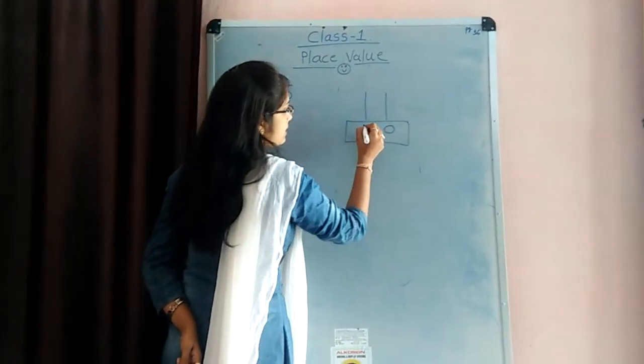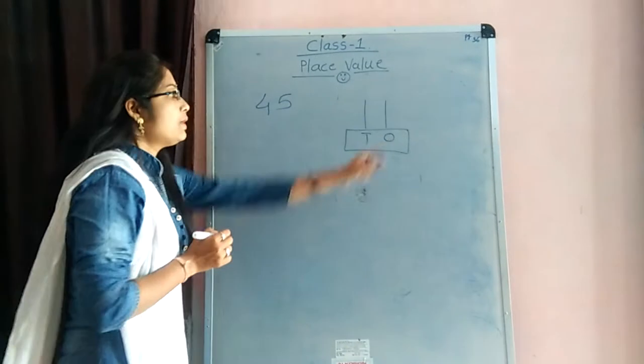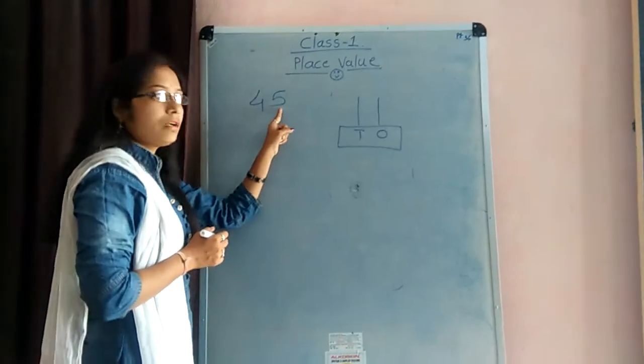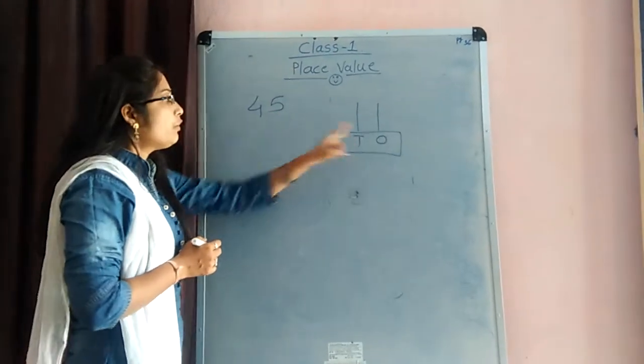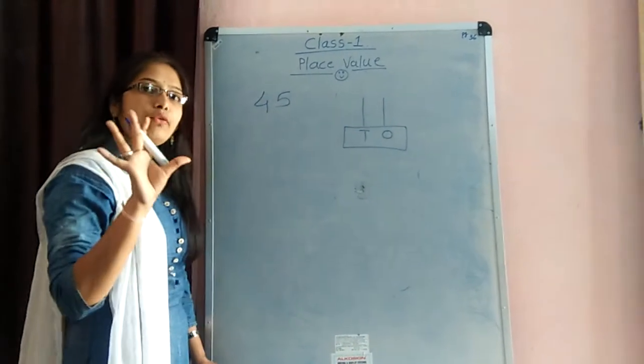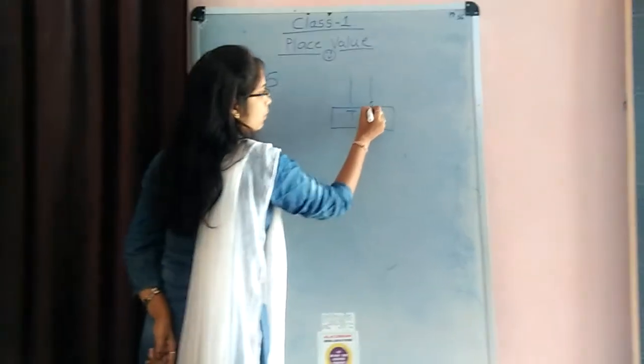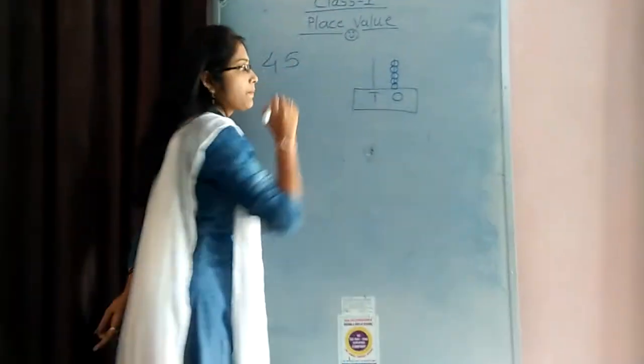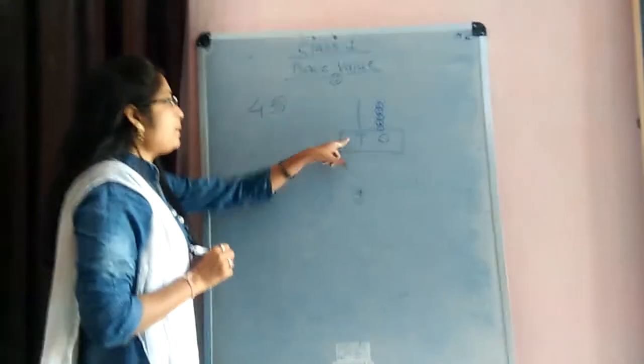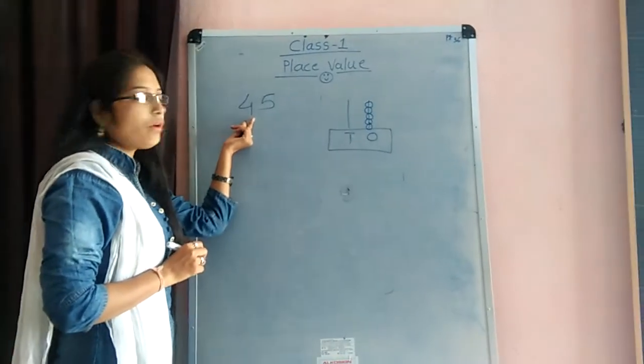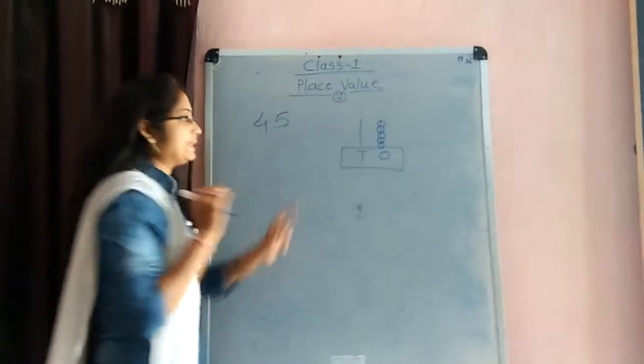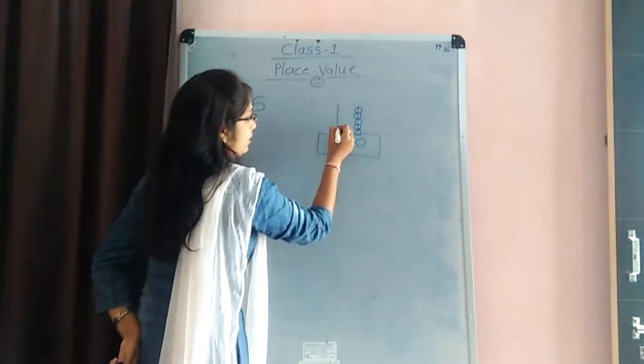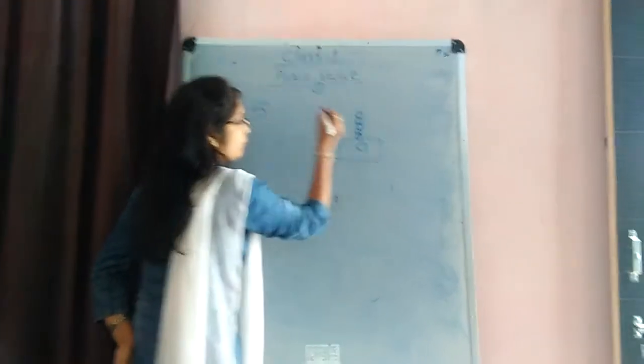Like that, right here 1s place, 10s place, 1s place, which number is? 5. So, we can draw here 5 bits. Like that. 1, 2, 3, 4, 5. And in 10s place, there are 4 numbers. So, we can draw here 4 bits. Like that. 1, 2, 3, 4.